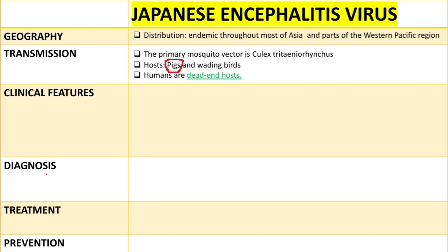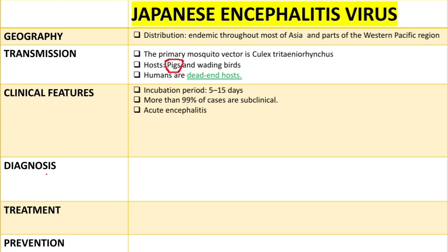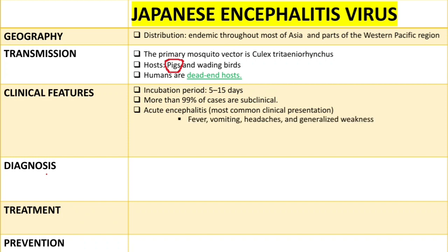Let's talk about the clinical features. The incubation period for this virus is 5 to 15 days. More than 99 percent of cases are subclinical, and acute encephalitis is the most common clinical presentation.